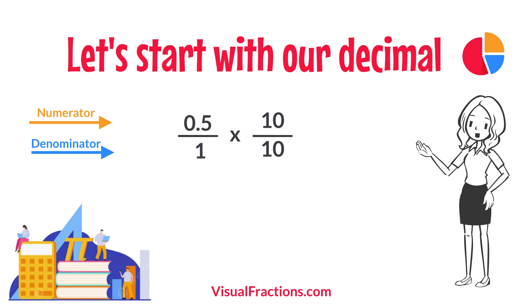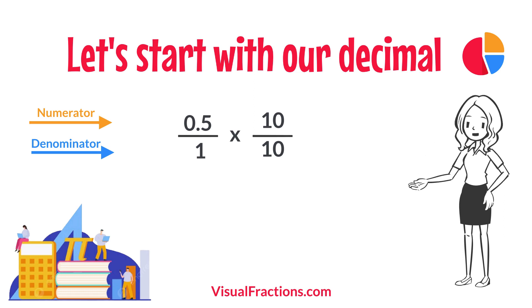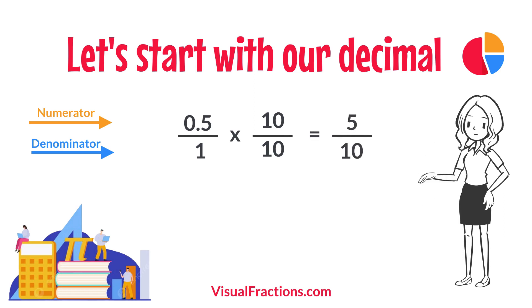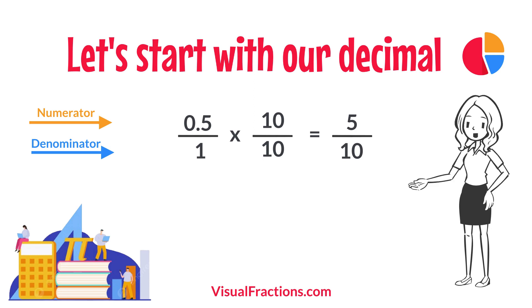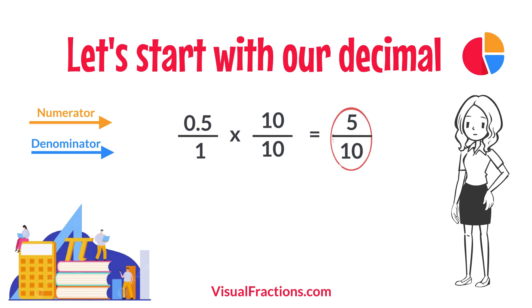So, 0.5 times 10 gives us 5, and 1 times 10 gives us 10. This translates 0.5 to the fraction 5 over 10.